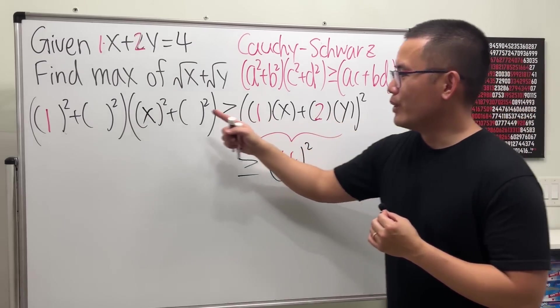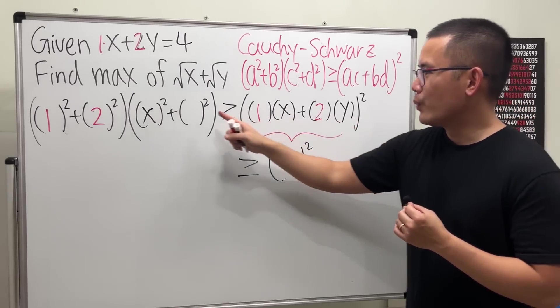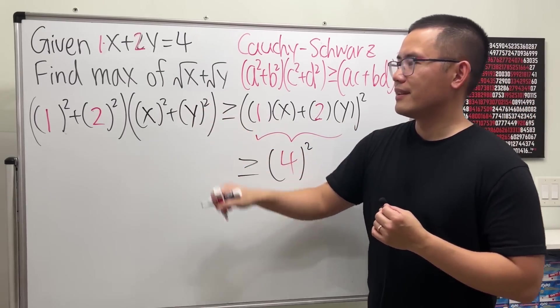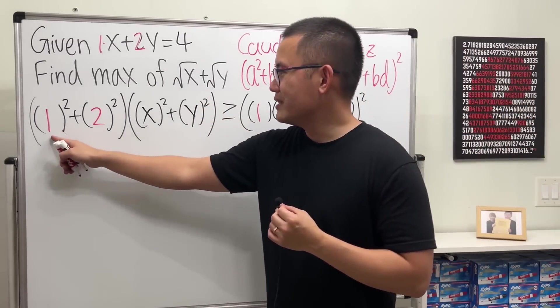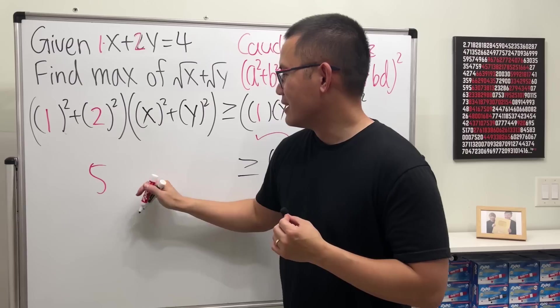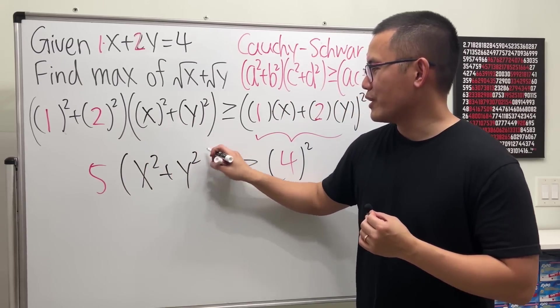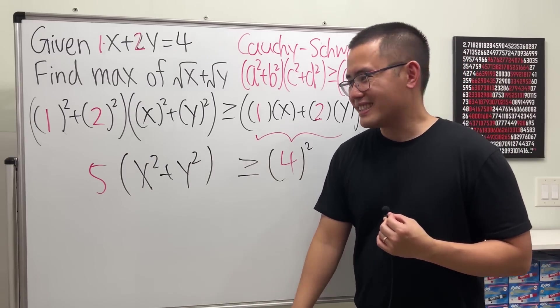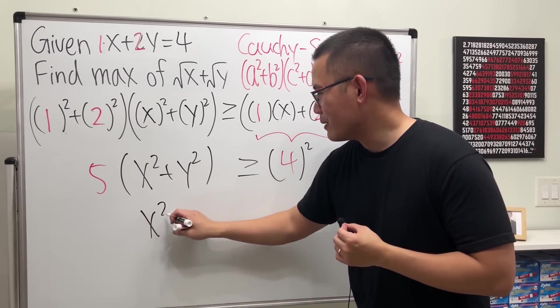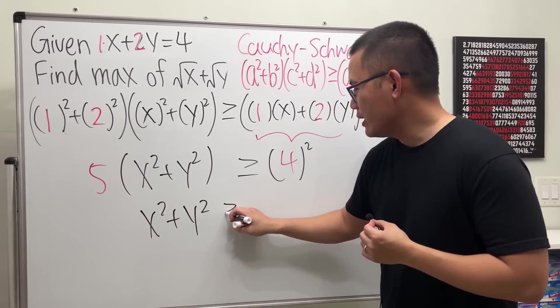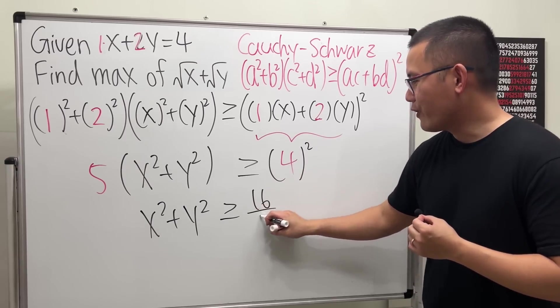Similarly, the 2 will go here. And then the y will go here. Okay, work this out. That will just be 5 times, this is x squared plus y squared. Guess what? But, divide the 5 on both sides, we get x squared plus y squared is greater than or equal to 16 over 5.